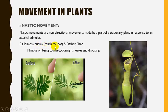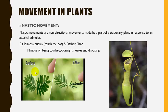The example of nastic movement is Mimosa pudica, the 'touch me not' plant, or in Urdu 'chui mui ka pada'. On being touched, Mimosa closes its leaves and droops. As you can see here, before the touch the leaves are open, and after the touch, Mimosa closes its leaves and droops.